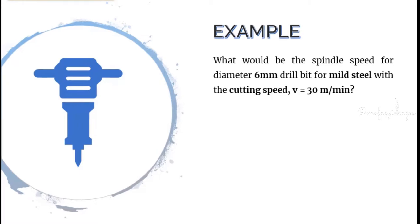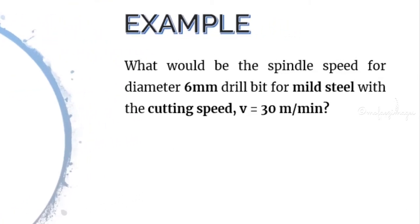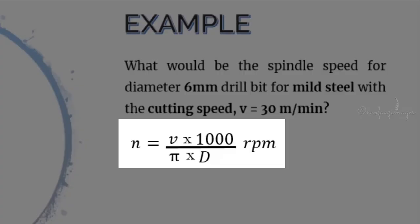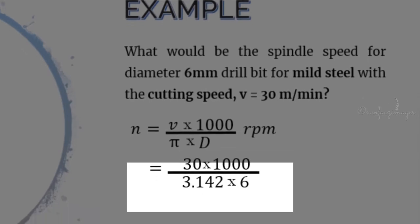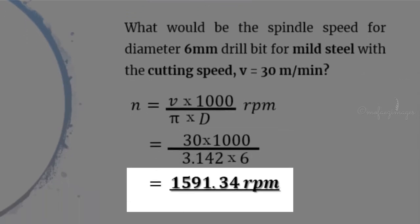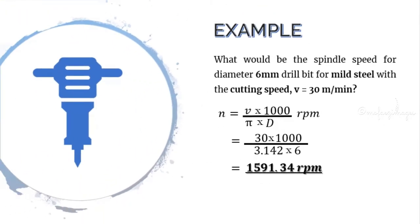Now we are going to do some exercises. Example: What would be the spindle speed for a 6 mm diameter drill bit for mild steel with a cutting speed of V equals 30 meters per minute? Applying the formula — N equals V times 1000 divided by pi times D — and inputting all the figures, we get the answer: 1591.34 RPM. Don't forget the unit.